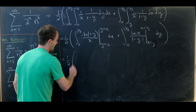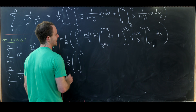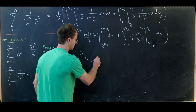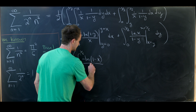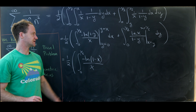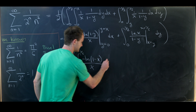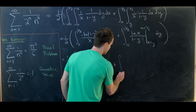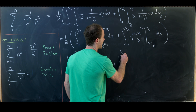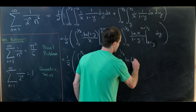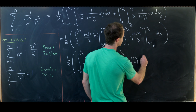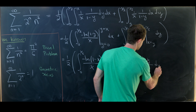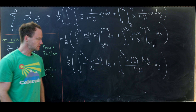Plugging in the bounds: for the first integral, substituting y equals x gives negative natural log of 1 minus x over x, and substituting y equals 0 gives natural log of 1, which is zero. For the second integral we get the natural log of 1 half minus the natural log of y over 1 minus y.